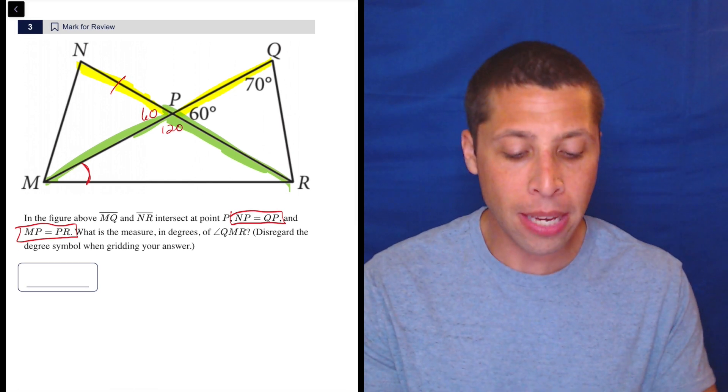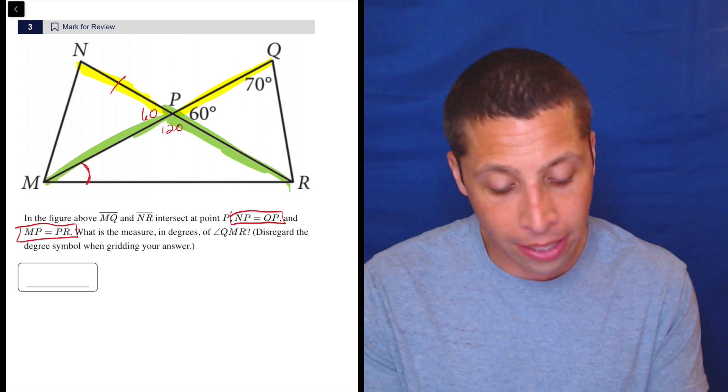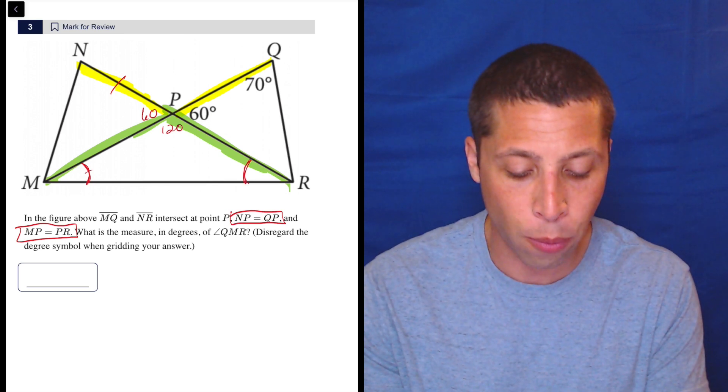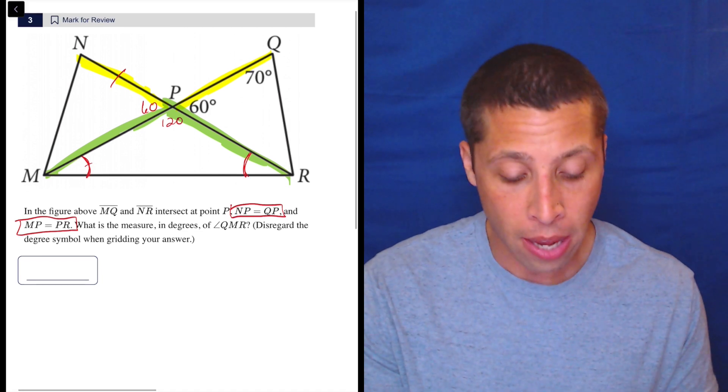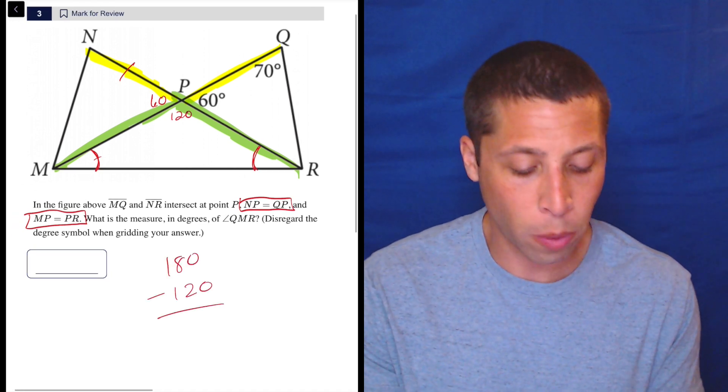And that means that this is an isosceles triangle, meaning that the angle at M there is equal to this other angle at R. So even though this is the one I want, they're the same thing. So we just take our 180 degrees in a triangle, subtract out the 120 we've already got.